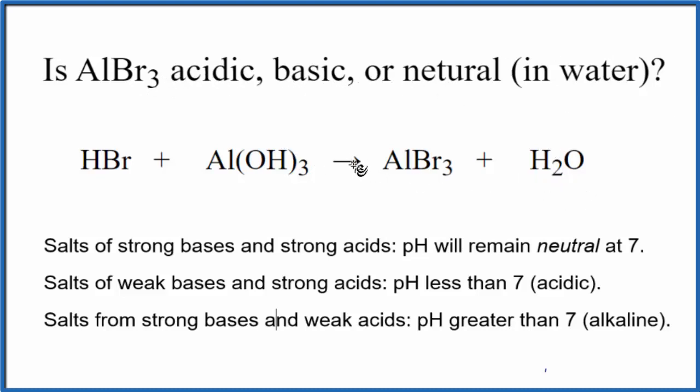To do that, we need the equation, the neutralization reaction, that produced the AlBr3. So we have hydrobromic acid and aluminum hydroxide, acid and a base, gives us a salt, AlBr3, and water. That's the neutralization reaction.